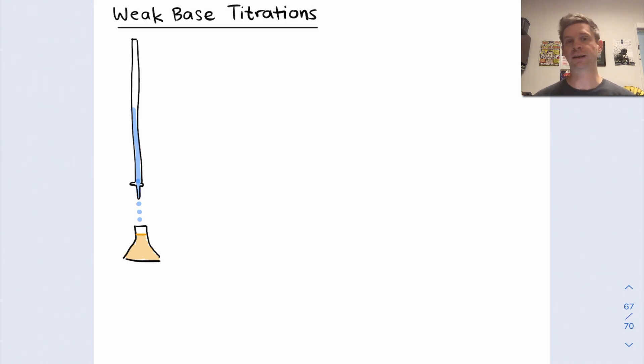Operationally, a weak base titration looks just like titration of a weak acid, except we have a strong acid now as the titrant in the burette, and our analyte is a solution of a weak base. A classic weak base is ammonia. We could imagine ammonia is the analyte, a weak base. We need to use a strong reactant as the titrant, so HCl, classic strong acid.